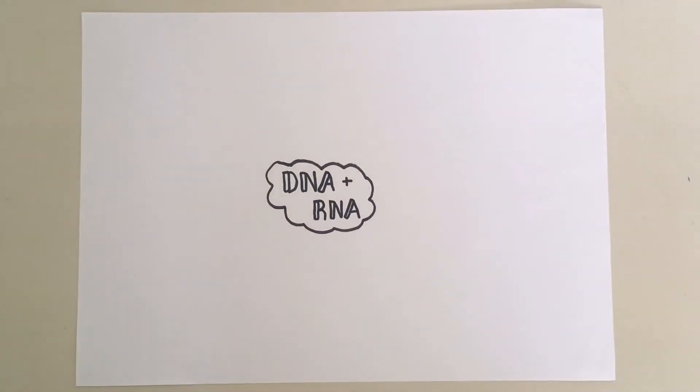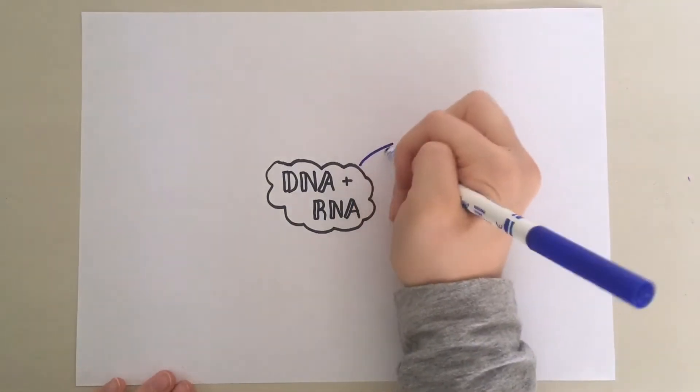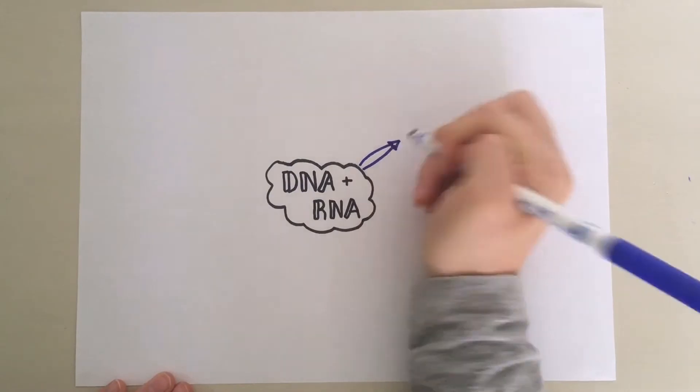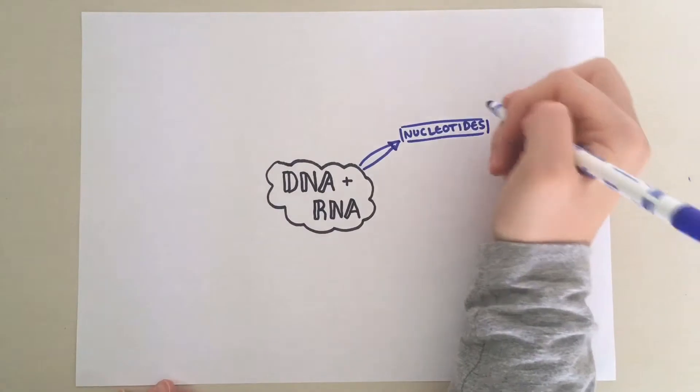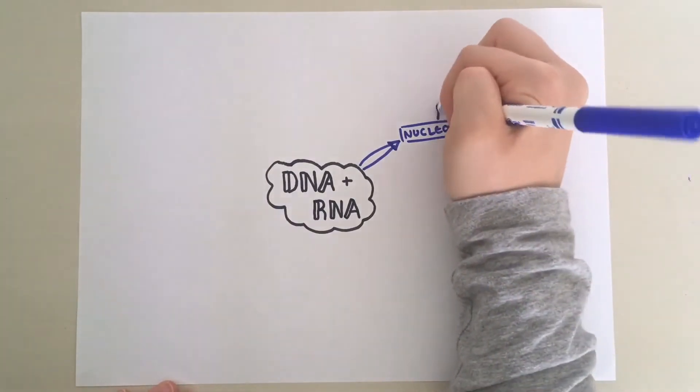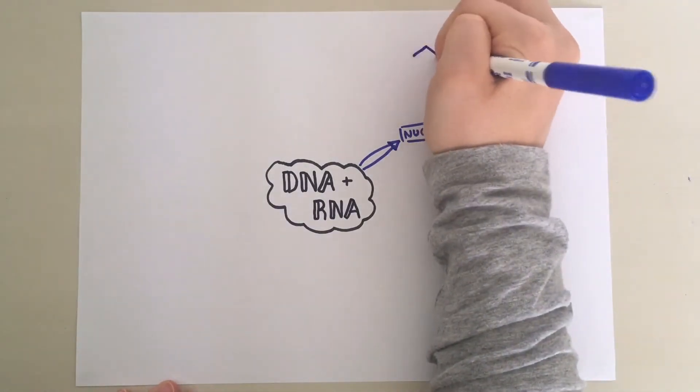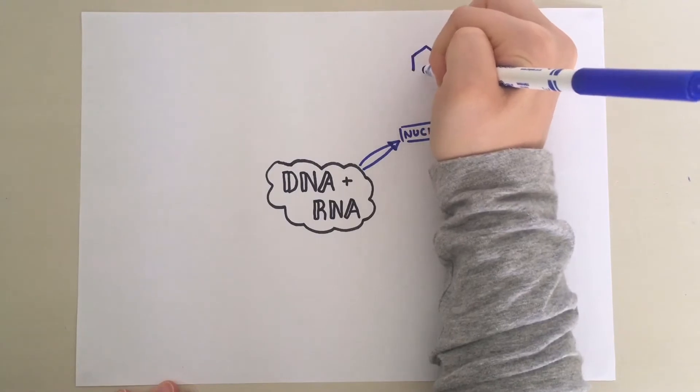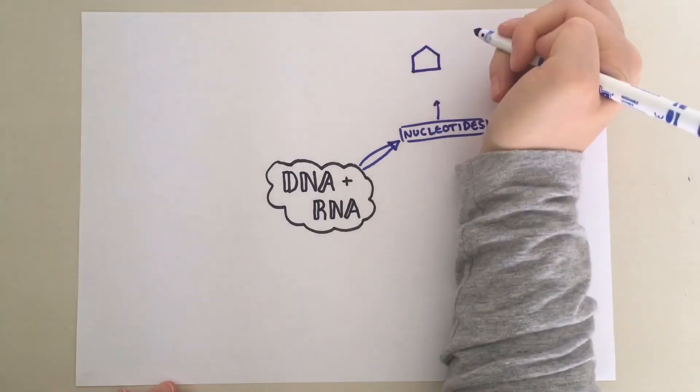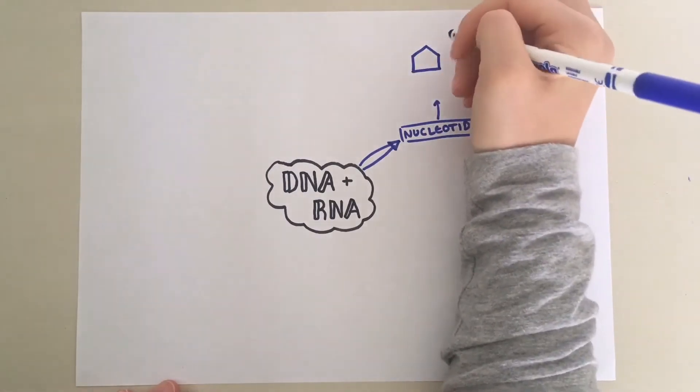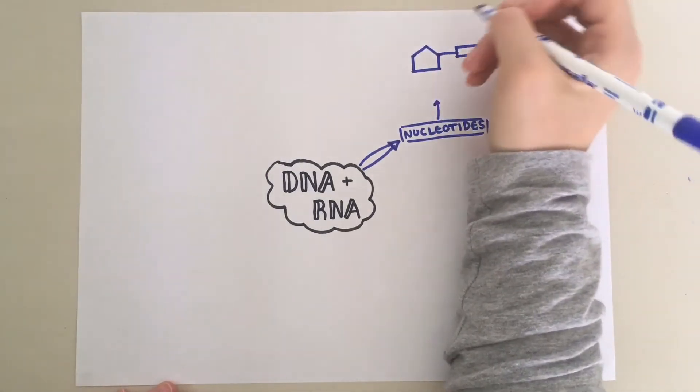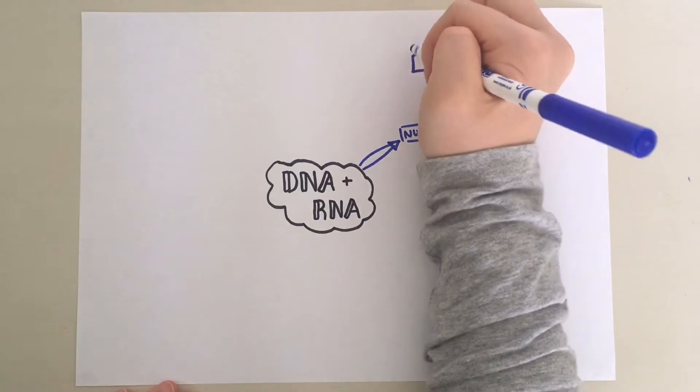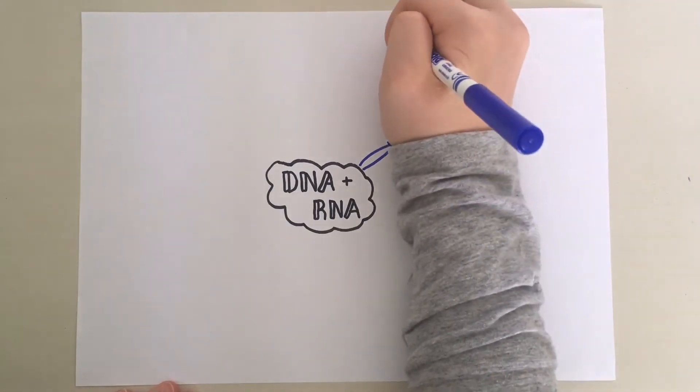First, we will start by looking at the monomers that make up the polymers DNA and RNA, known as nucleotides. Nucleotides have this basic structure. You've got a pentose sugar. It's known as a pentose sugar because it has five carbon atoms. Then you've got a nitrogenous base, nitrogenous because it's containing nitrogen. And then you've got a phosphate group up here.